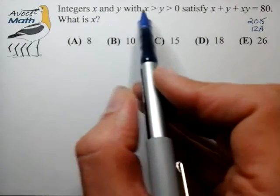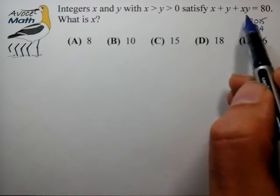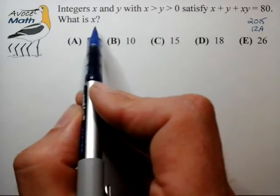Integers x and y, with x greater than y, both of which are greater than 0, satisfy x plus y plus xy is equal to 80, what is the value of x?